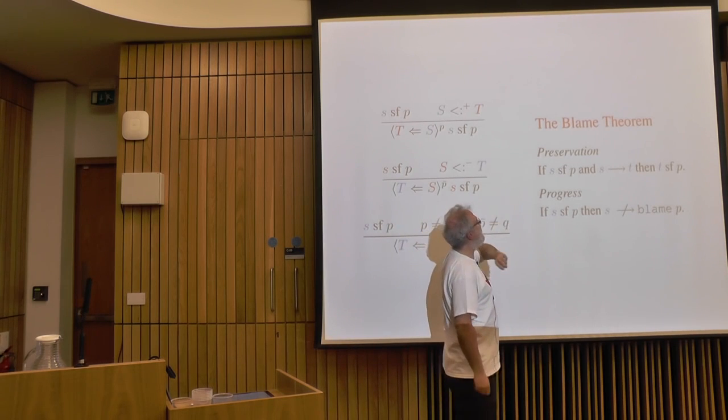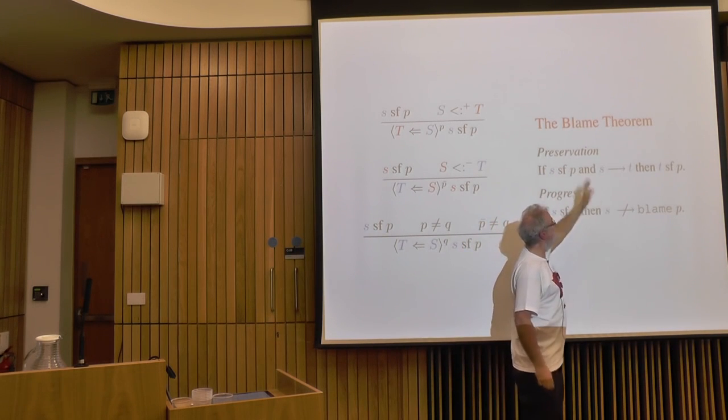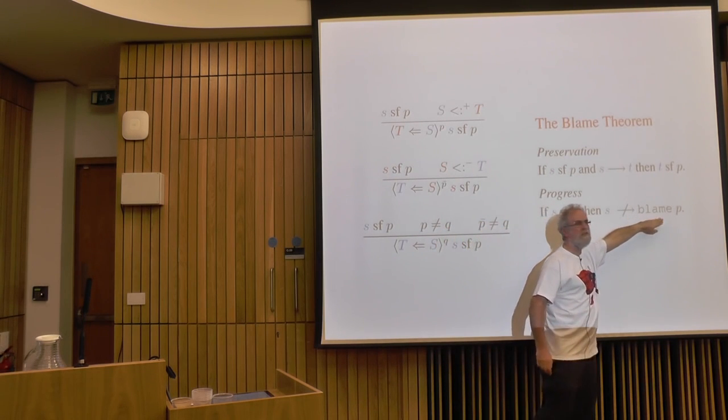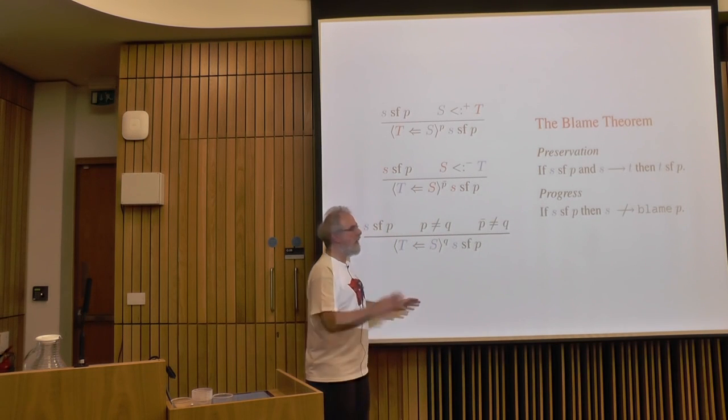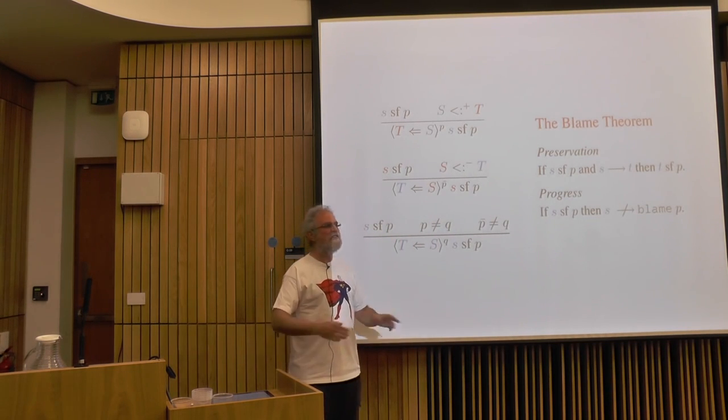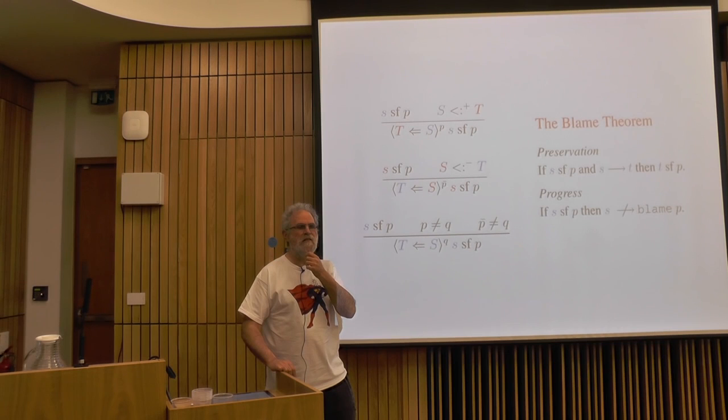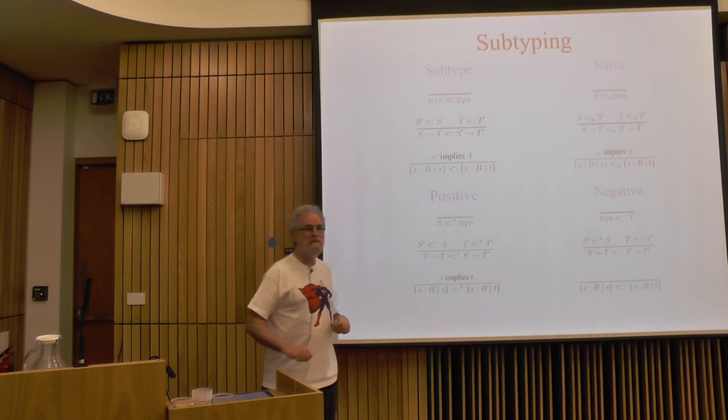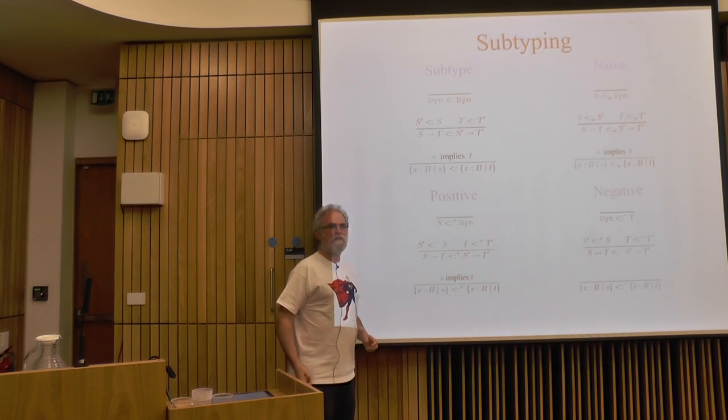The first three papers that were written on gradual typing: one was by Jeremy Siek and Walid Taha, one was by Cormac Flanagan, and one was by David Herman and many others. They were all basically the same thing, and they all basically had the same soundness result, which is in the subset of the gradual type language that's strongly typed you can't go wrong. But it says almost nothing about the type safety property if you were actually doing stuff that was gradually typed. At least we can actually say something about the safety, of course. They hadn't understood the importance of blame, and I just took that part to explain it in a different way.